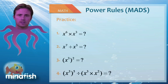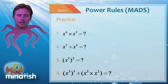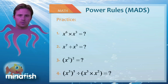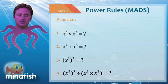On the next one, x to the seventh divided by x to the third, we would subtract, which would yield x to the fourth. And the next one, we have x cubed raised to the power of two, which would be three times two, x to the sixth.